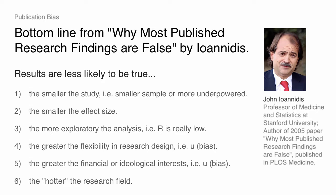The greater the flexibility in research design is a key concern. The more flexibility the researcher has, the more they can drop data they don't like, look at a different outcome variable, run a different model until they get P less than 0.05. Another form of bias is the greater the financial or ideological interests — if researchers go into a problem wanting to find something, they're going to be more likely to find it.